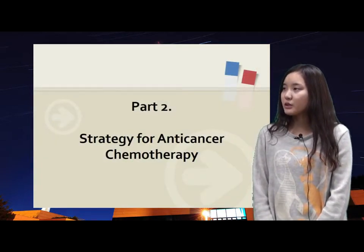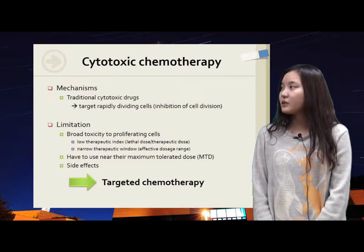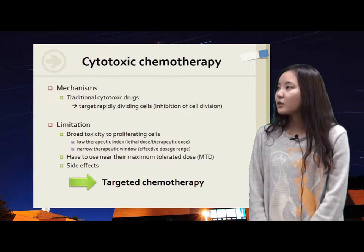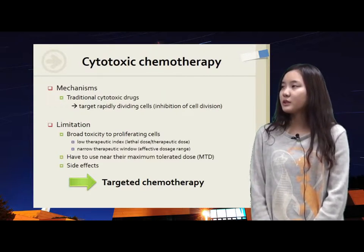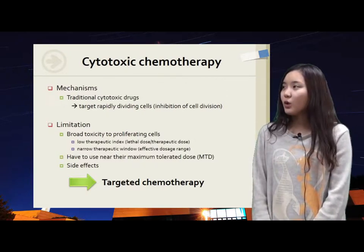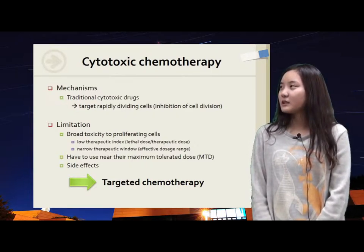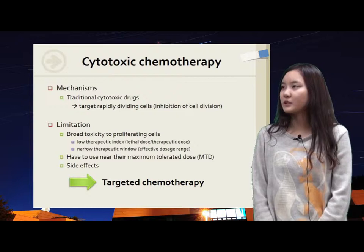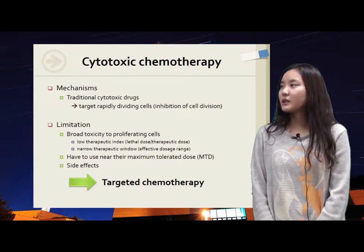Part 2 is about strategy for anti-cancer chemotherapy. Traditional cytotoxic drugs target rapidly dividing cells primarily through the inhibition of cell division. For example, alkylating agents target DNA base pairing, and toxins target microtubule function. However, therapeutic activity of cytotoxic drugs is limited by broad toxicity to proliferating cells. They show low therapeutic index and narrow therapeutic window, and most have to be used near their maximum tolerated dose. That's why targeted chemotherapy came up.